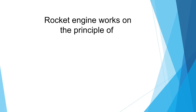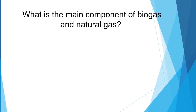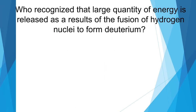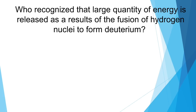A rocket engine works on the principle of Newton's third law. What is the main component of biogas and natural gas? Methane is the main component of both biogas and natural gas.